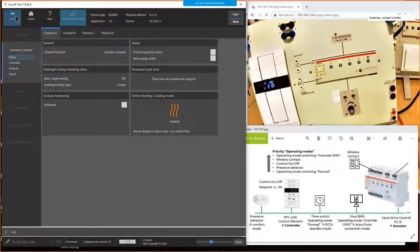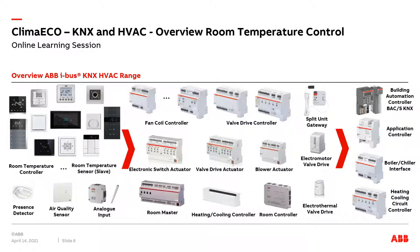That concludes the practical demonstration of room temperature control in a meeting room with the valve drive controller working as an actuator and the room temperature controller working as a master. Thank you for participating and listening. Jürgen hands back to Thorsten. Today we saw a solution where the valve drive controller is used only as an actuator. The same applies if you use only valve drive actuators — VAA/S or the electronic switch actuator — which are also in our range. In that case, the controller part goes into the real room temperature control element. We have both solutions; it depends on the products and total system constellation.